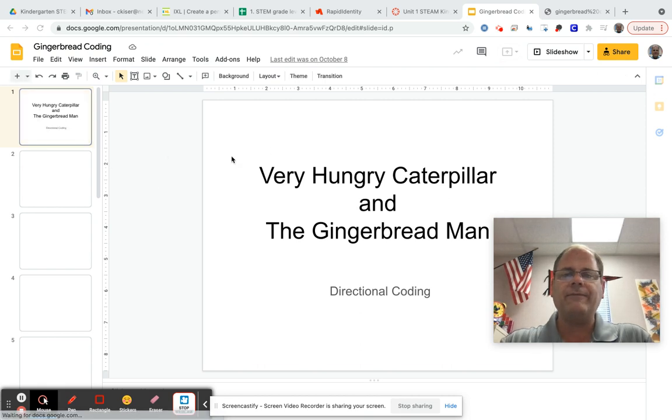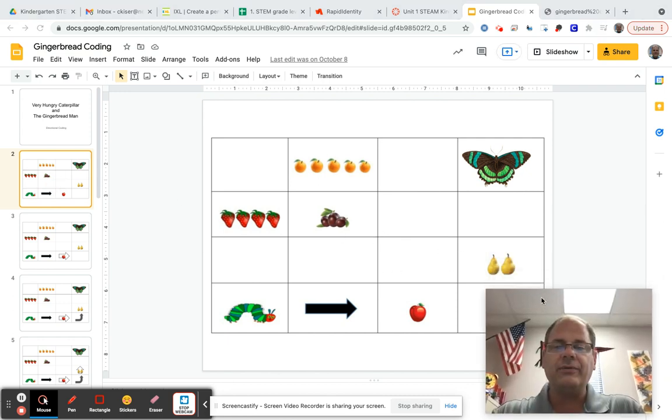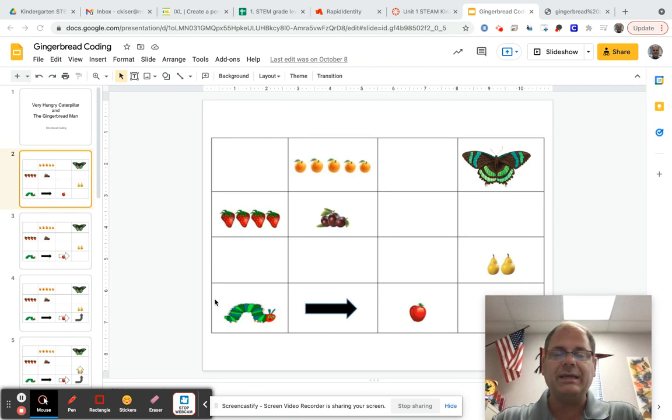So we are looking very closely at how does the very hungry caterpillar become a butterfly? He has to eat all of his fruits and vegetables, all of his fruits to get to the butterfly.